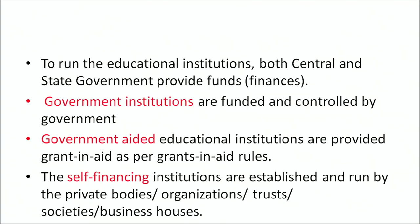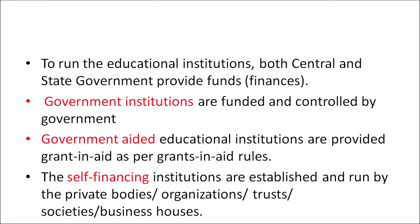The third category is self-financing institutions, established and run by private bodies, private organizations, trusts, societies, or even business organizations. They do not receive any financial support from the government; instead, they charge fees from students and use that money for managing the institution.